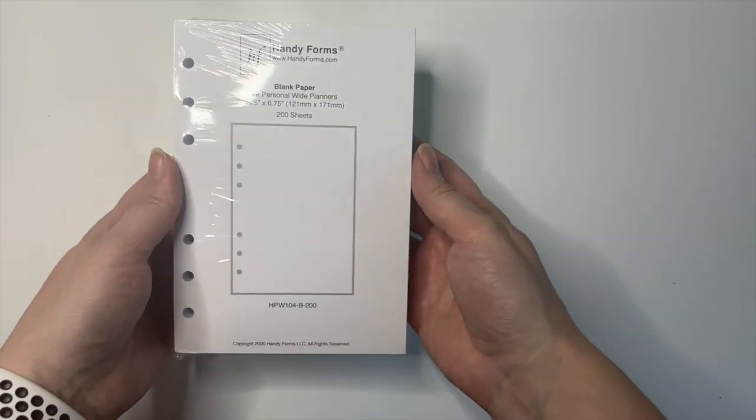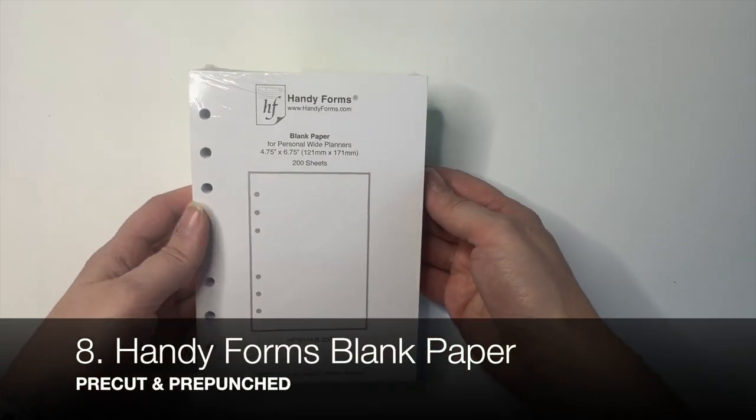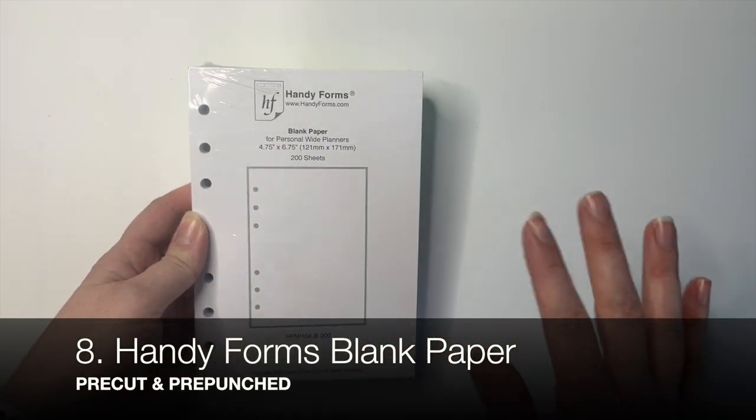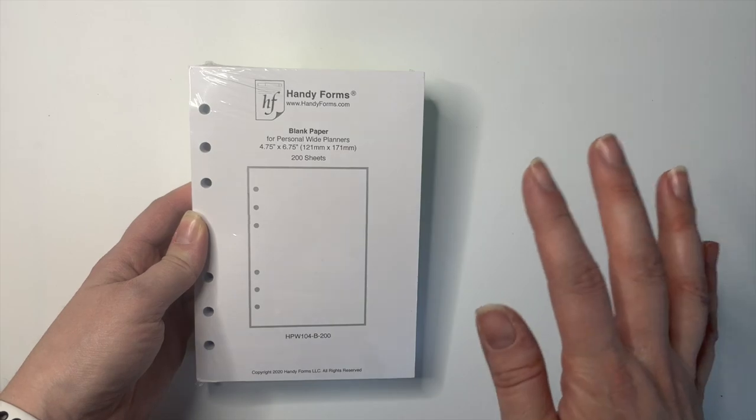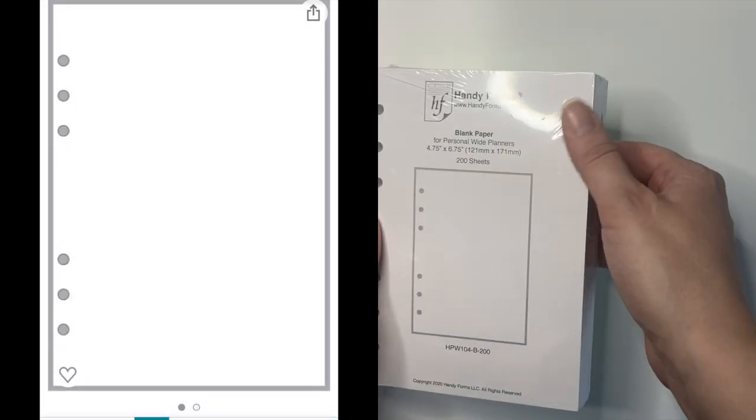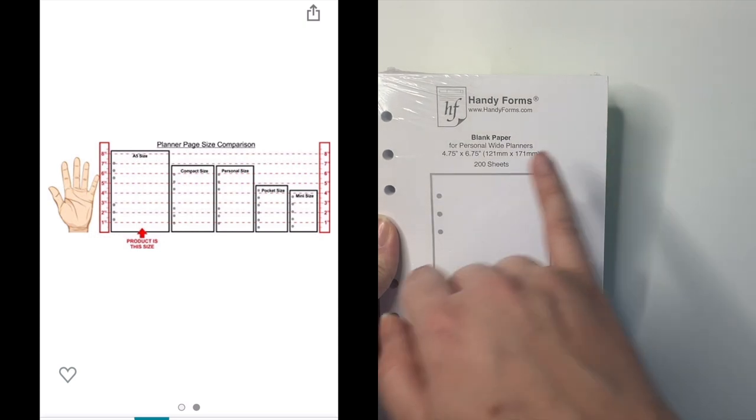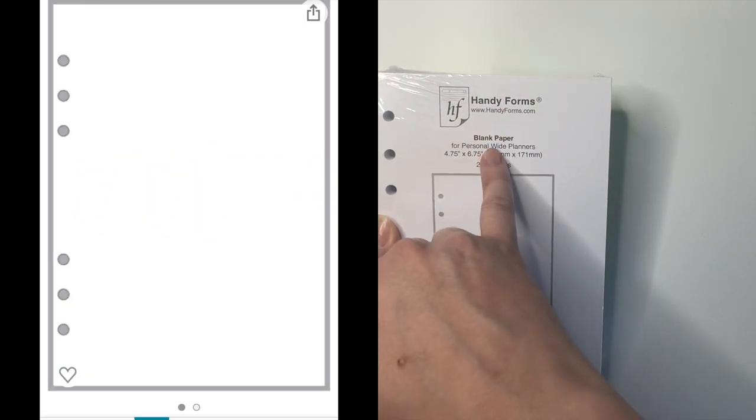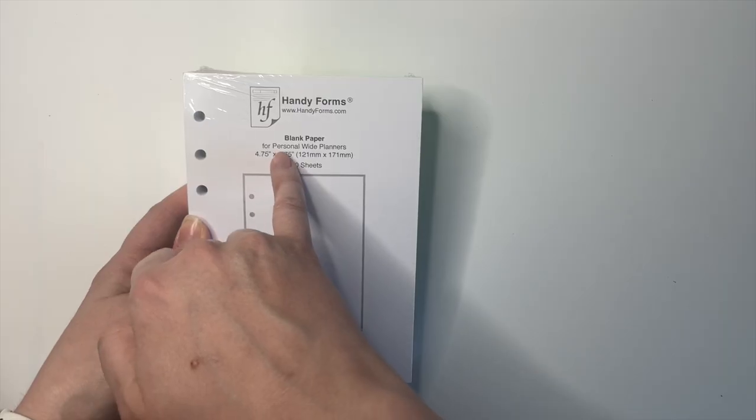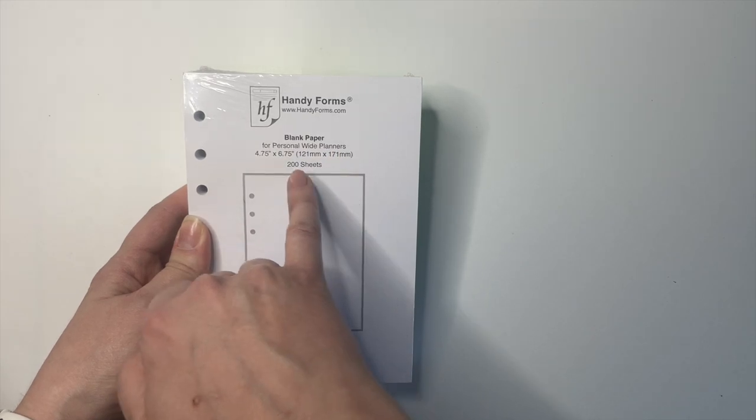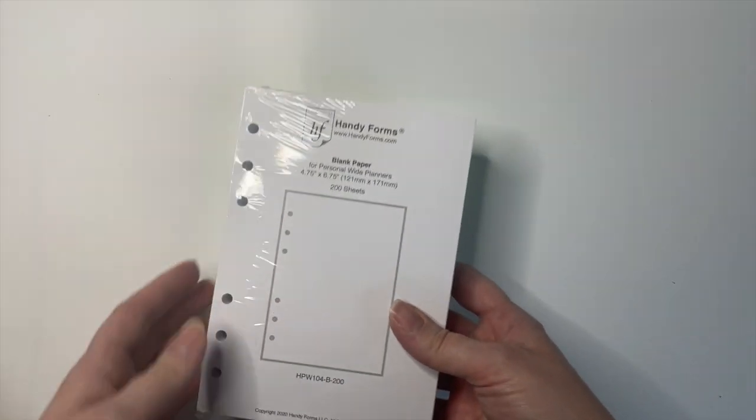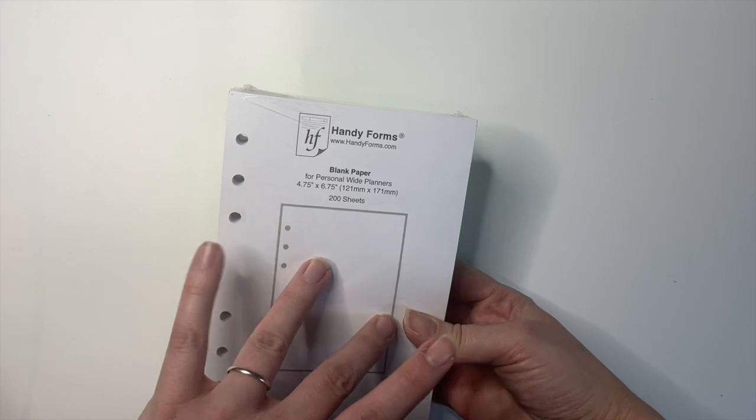Next, I'm going to talk about something that I've mentioned a lot of other times on this channel. And that is the Handyforms pre-cut, pre-punched planner paper. Now, this one is the only one I could find that was still in the plastic. And this is the Handyforms blank paper for personal wide planners, 200 sheets.